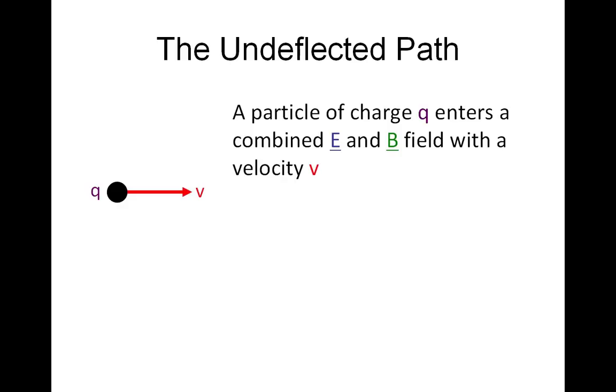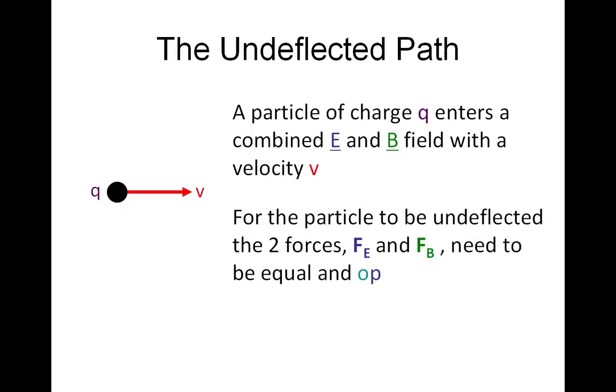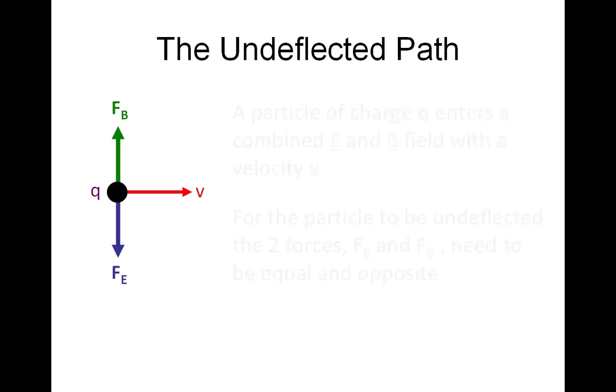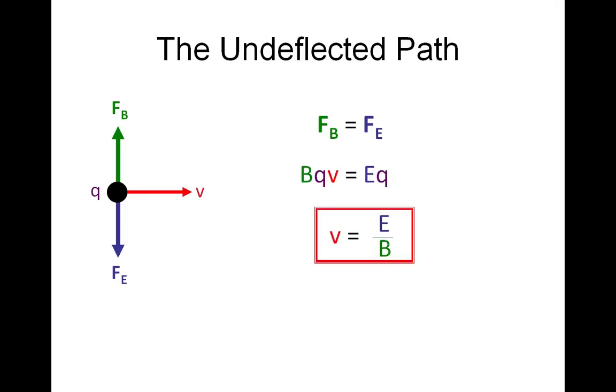So a particle of charge Q enters a combined E and B field with a velocity V. We're going to take both the magnetic force and the electric force to be equal and opposite. So we have F equals BQV, and Fe equals EQ. That gives us BQV equals EQ. If we rearrange that,